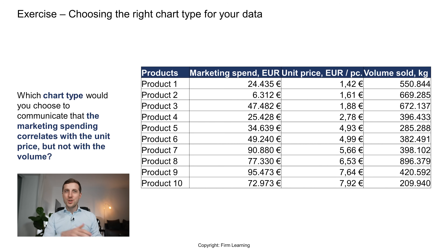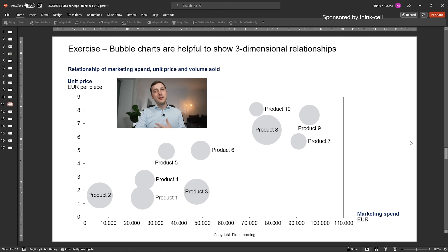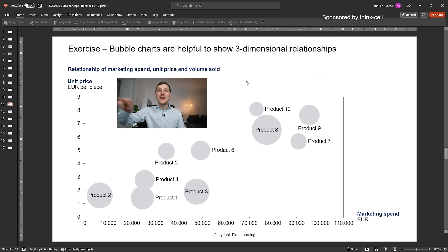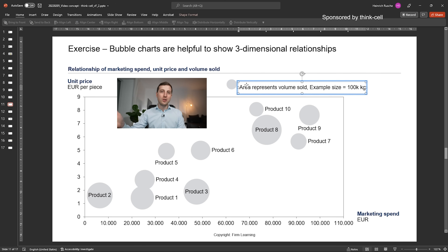Now let's look at a more complicated data set. You see different numbers — marketing spend, unit price, and volume sold for different products. The question is: which chart type would you choose to communicate that the marketing spend correlates with the unit price but not with the volume? One good option here would be bubble charts, which are great when you have three number dimensions in one chart. The X-axis has marketing spend, the Y-axis has unit price, and you can clearly see the correlation. The size of the bubbles represents volume sold, and it's also clear there's no correlation between volume and marketing spend.